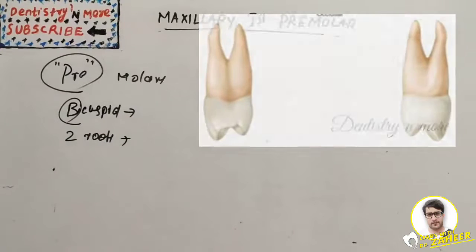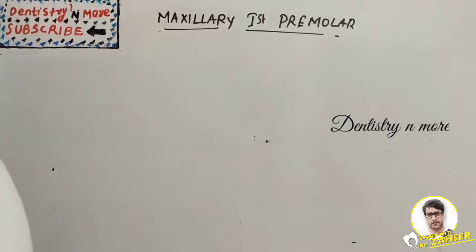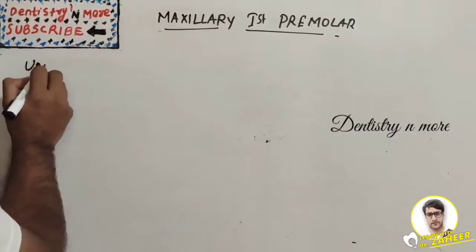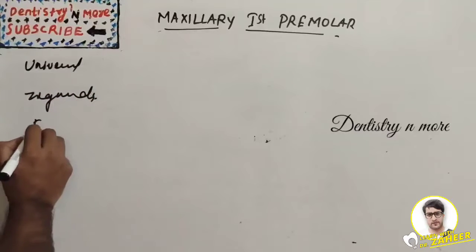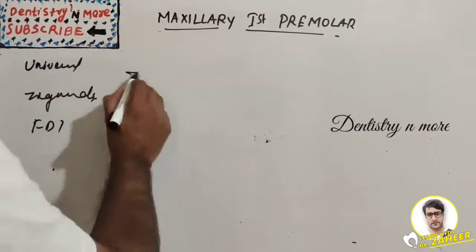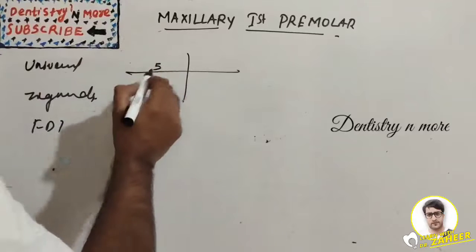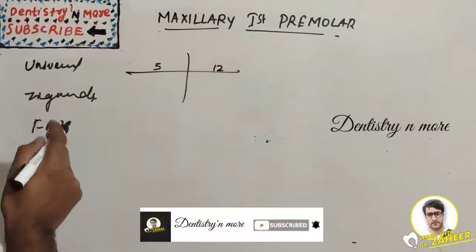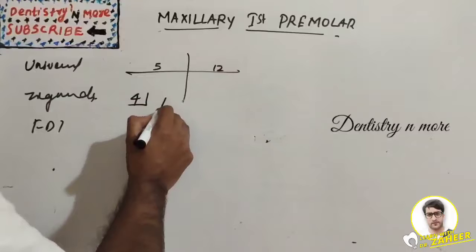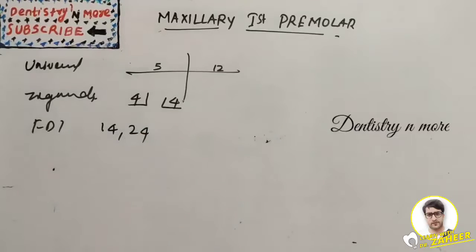The tooth number — we have three systems. The systems are: Universal, Zsigmondy-Palmer, and FDI system. In the Universal system it will be number 12. In the Zsigmondy-Palmer system it is 4 bar, and in the FDI system it is 14 and 24.